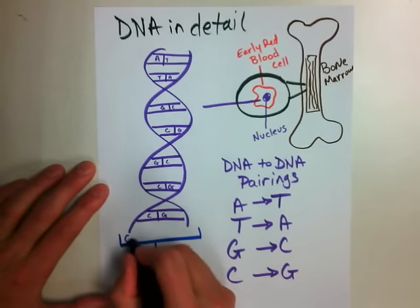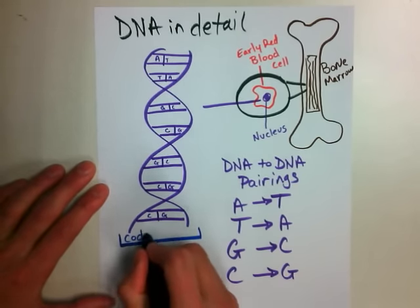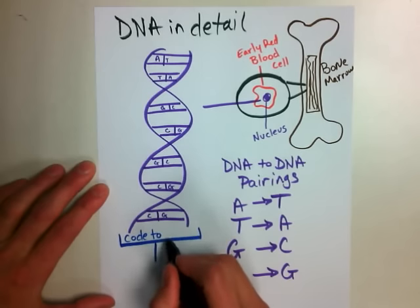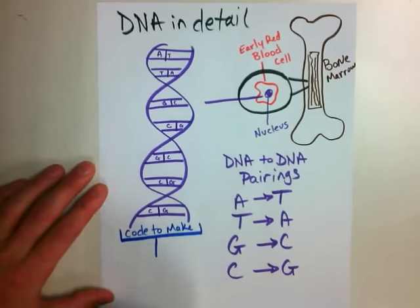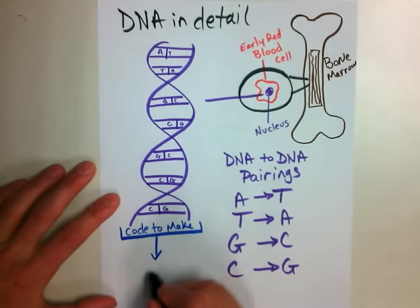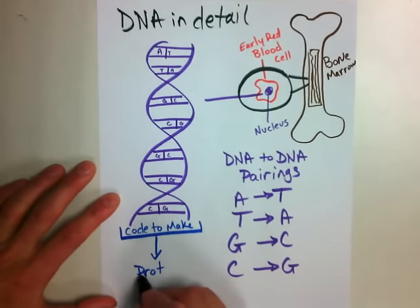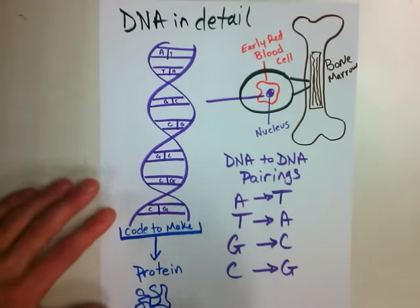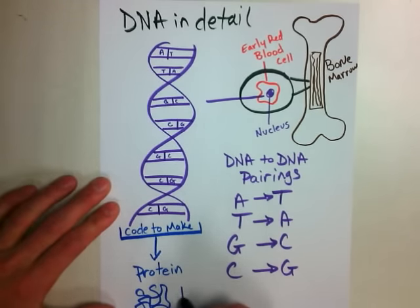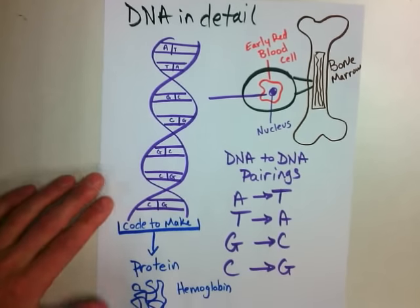This code and how they come in A's and T's and G's and C's will make a specific protein. So this is the code to make protein. And this protein that I just drew out is hemoglobin. We're going to look at how hemoglobin is made in even more detail.